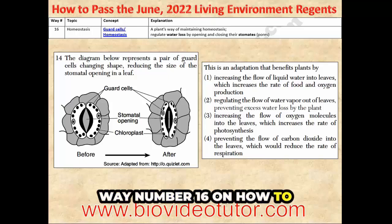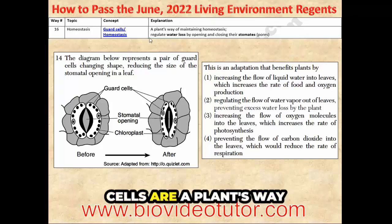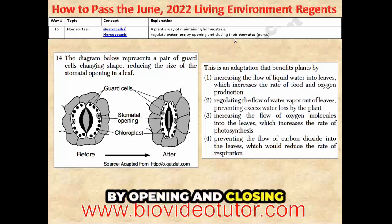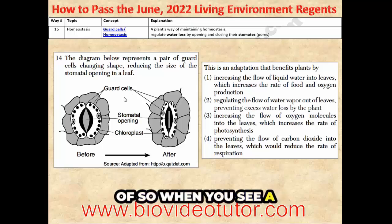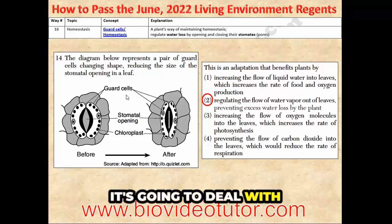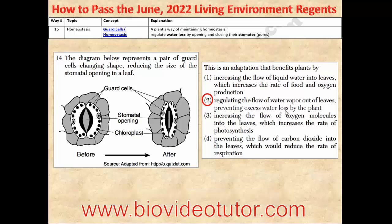Way number 16 on how to pass the June 2022 Living Environment Regents. Guard cells are a plant's way of maintaining homeostasis, which is how they regulate water loss by opening and closing their stomates or pores. So when you see a question about guard cells, it's going to deal with regulating the flow of water vapor out of leaves, preventing excess water loss by the plant.